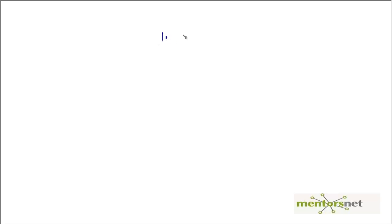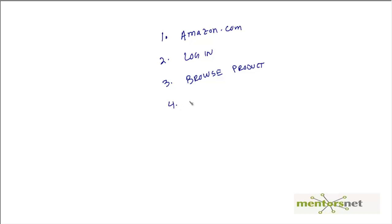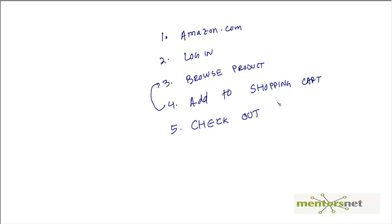Let's consider a business scenario where you are going to your favorite retail shop, say amazon.com, and you are logging in, browsing a couple of products, adding some favorites to the shopping cart, possibly repeating browse and add steps, then finally checking out — where you give your credit card to pay for the products — and then you are logged out. Out of these five transactions, let's call each one a transaction.